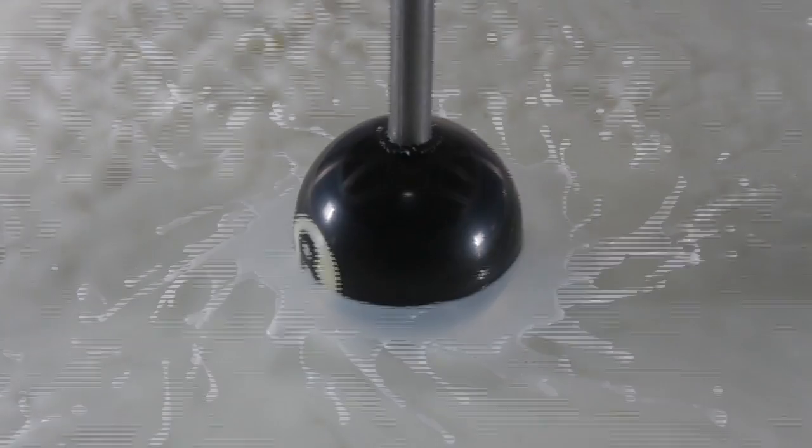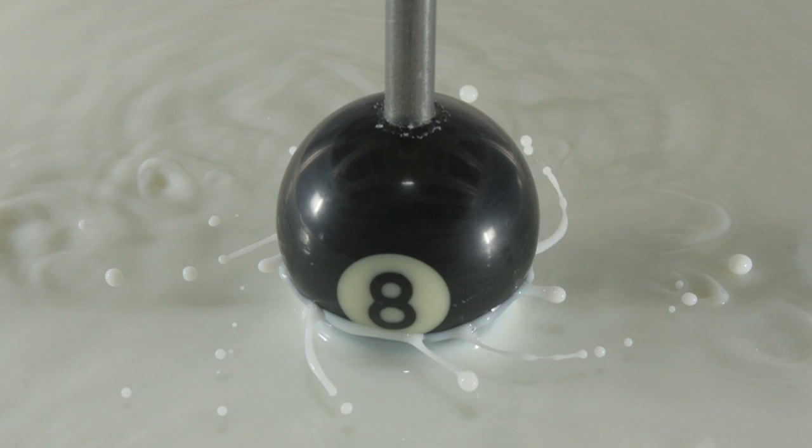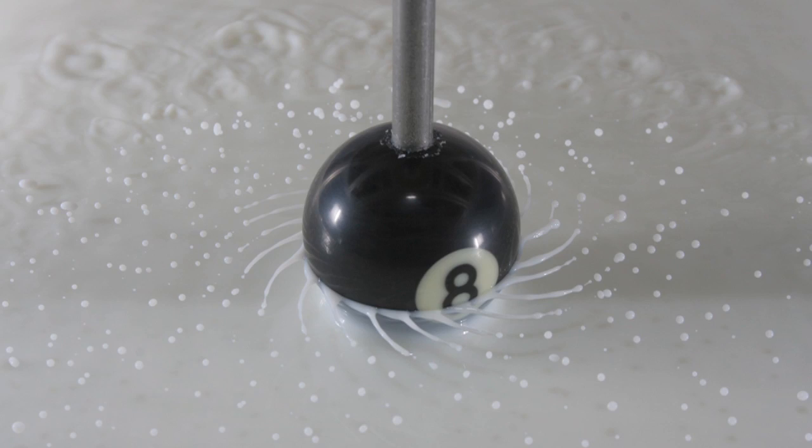As you increase the speed, you get different effects. So if you go slow, you get fairly large globule-like droplets flying off the sides. And then as you speed it up a little bit more, you get these beautiful jets.